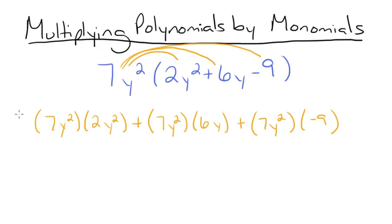So now let's multiply all of our terms. 7y squared times 2y squared is 14y to the 4th. Remember, when you multiply exponential terms with the same base, you simply add the exponents. So we've got 2 plus 2 is 4, so that's where the y to the 4th came from. And then 7y squared times 6y is 42y cubed, so plus 42y cubed. And then plus 7y squared times negative 9 is negative 63y squared.